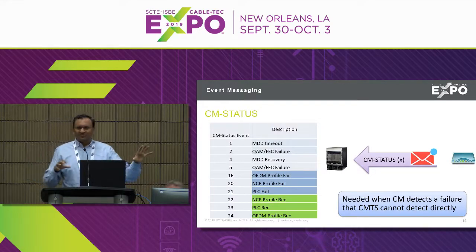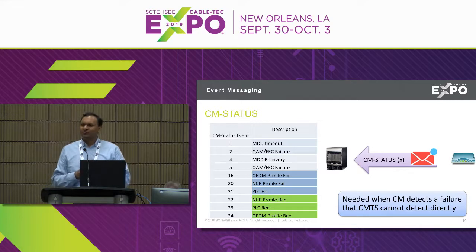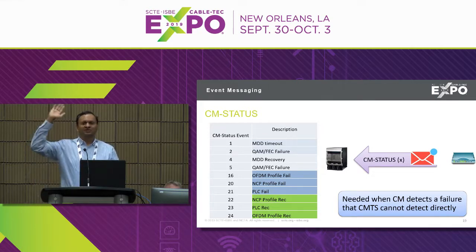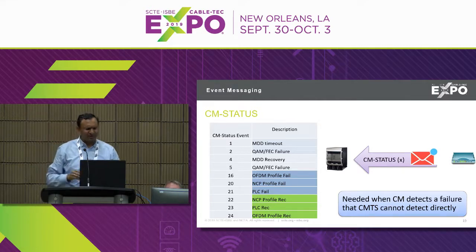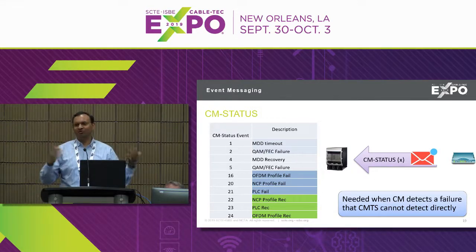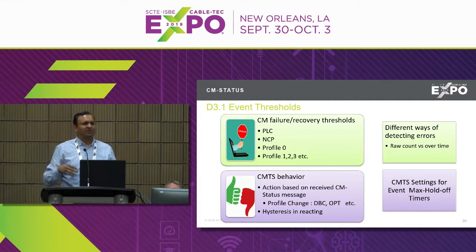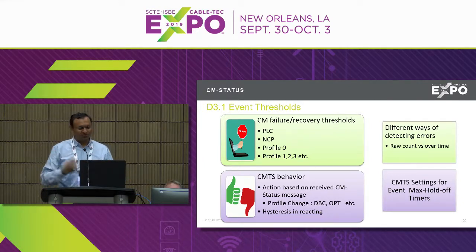Now let's talk about CM status messaging — the MAC layer. When a modem sees codeword errors, it raises a flag: 'Hey, I'm in trouble — CM status message, Mr. CMTS, do something about it.' Multiple events are defined: if your OFDM profile fails, if your NCP profile fails. The modem can detect this based on a raw number of codewords — for example 10 out of 100 — or based on time, such as errors in the last two seconds out of ten. Those thresholds are modem-proprietary, so work with your vendor to tune them appropriately.